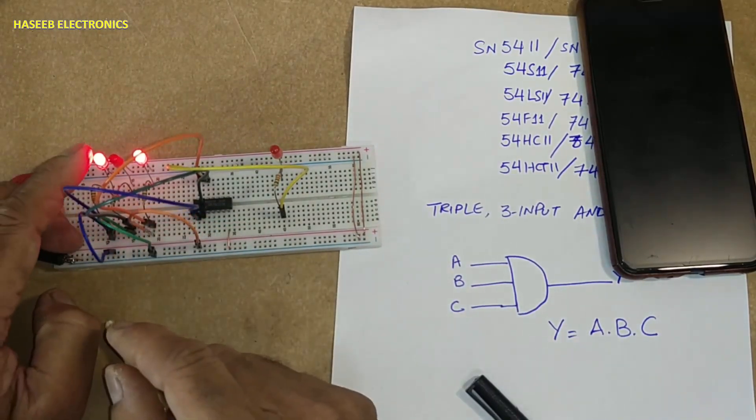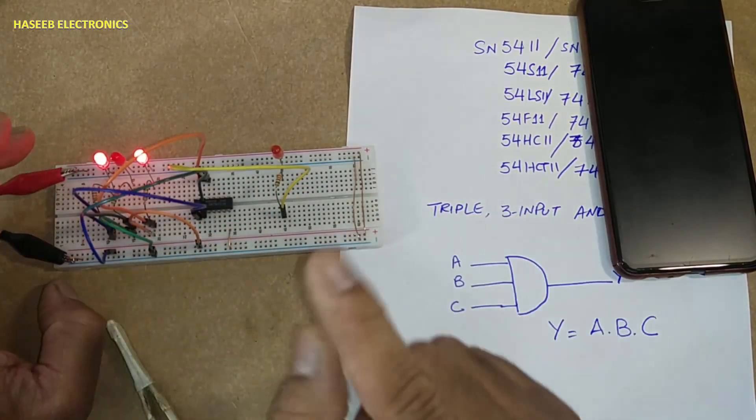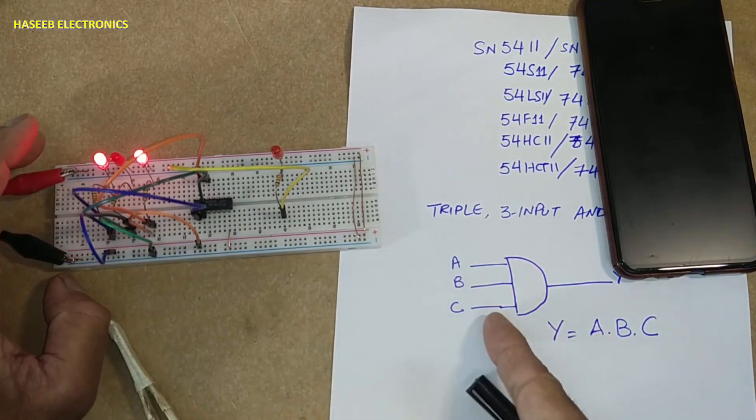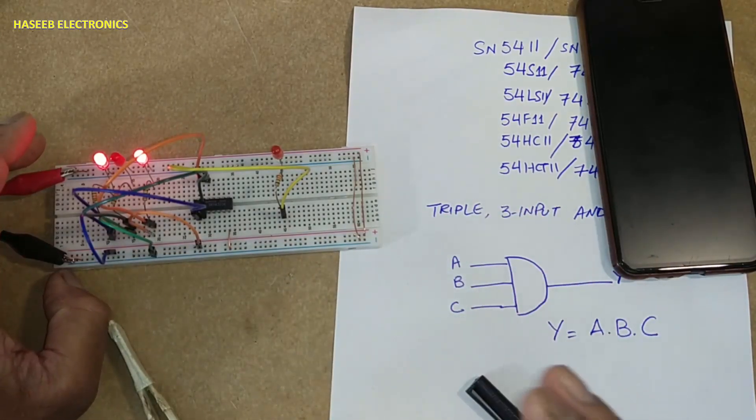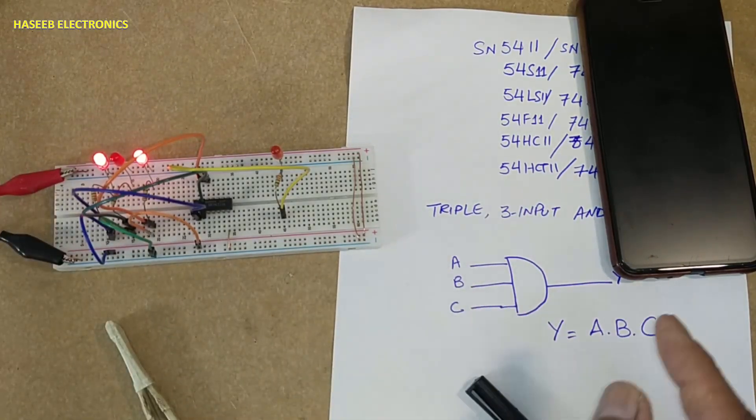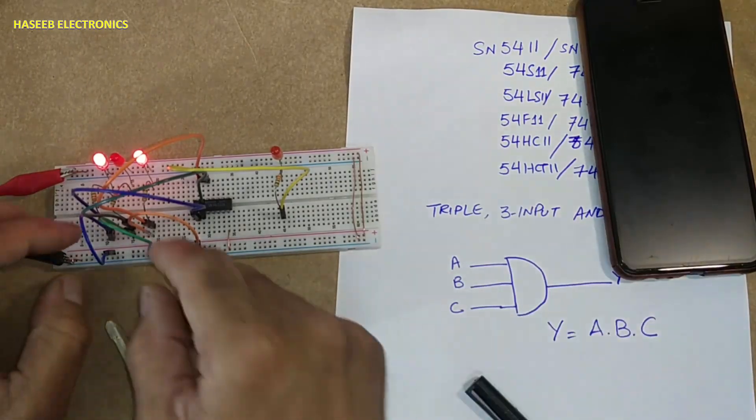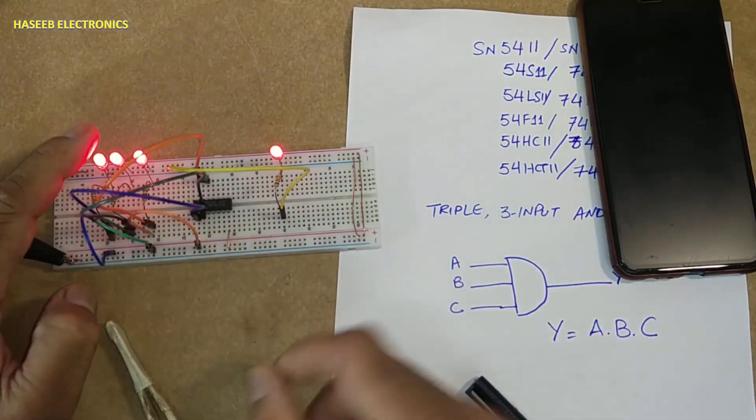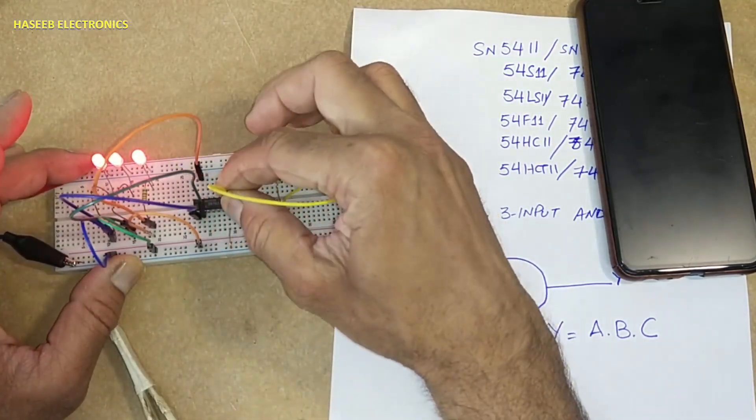One high, second low, third high. That means any one out of all inputs, either it is two, three, four, how many inputs are there. Here it is the condition for AND gate that all inputs must be high. When all inputs are high, output is high. Let's check the second gate, pin number 6 output.